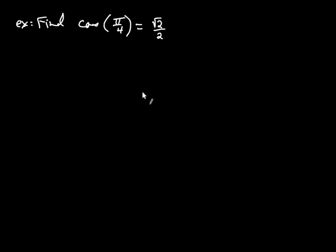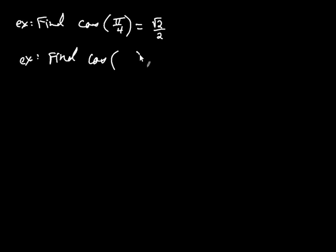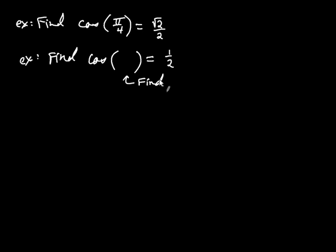Sometimes the situation is reversed. Somebody could ask us to find cosine of some unknown angle, but they might not give you the angle — they might tell you that cosine of that unknown angle is 1 half. So in this example, you're asked to find the angle such that cosine of that angle is 1 half.